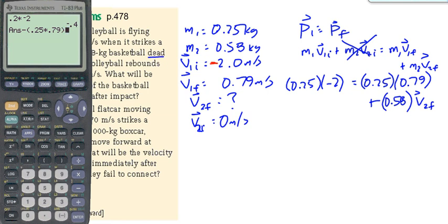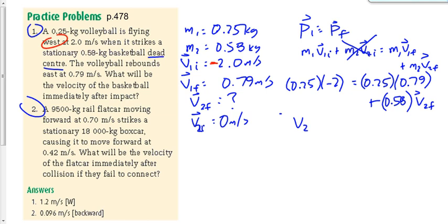So I made a mistake there. Let's do that again. 0.25 times negative 2 gives me negative 0.5. Let's subtract from that 0.25 times 0.79, gives us negative 0.6975, which we turn around and divide by 0.58. It gives us negative 1.20. And for us, since we made east positive, then this negative value means it's to the west.